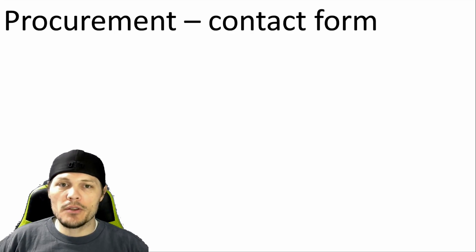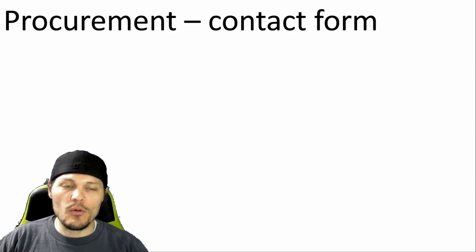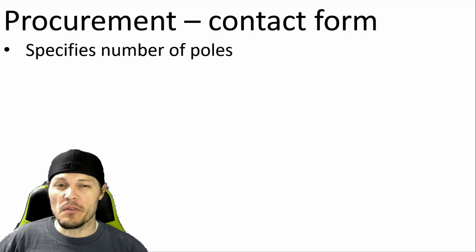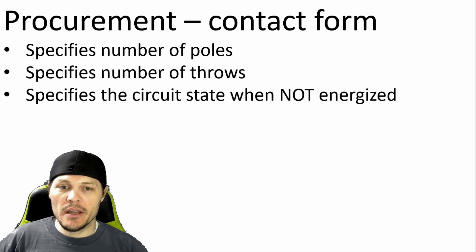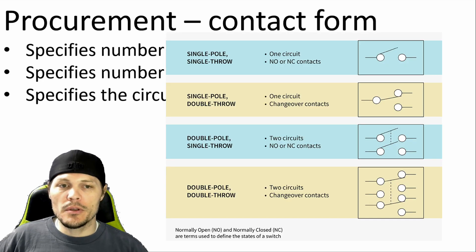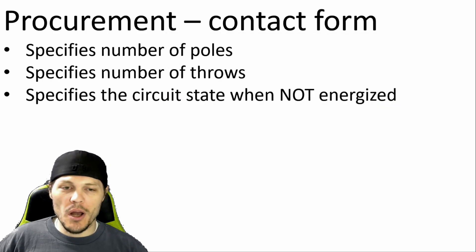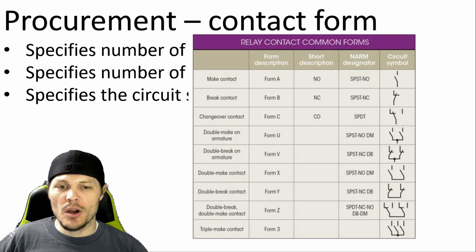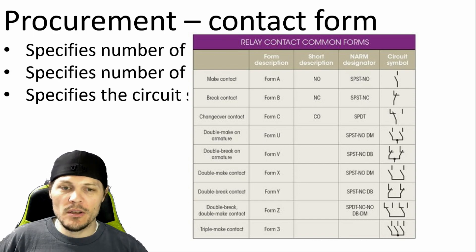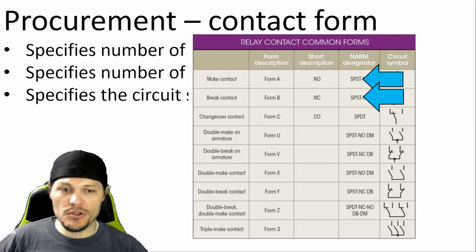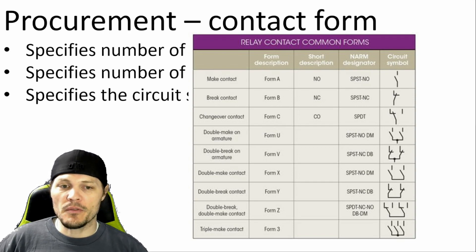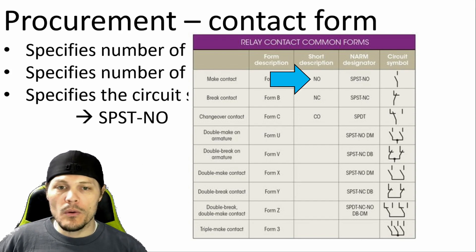Another parameter you'll see in contactor product descriptions is something called contact form, which has three pieces of information: the number of poles, the number of throws, and the circuit state when the coil is not energized. Here's a diagram showing the differences between single and double pole, single and double throw. It's actually more complicated than I would have guessed, but lucky for me, my use case is pretty simple. I just need a basic on-off switch on a single circuit, meaning I want a single pole, single throw contactor — abbreviated SPST — and when not energized, I want to prevent electricity from flowing, so it should be normally open, or NO.